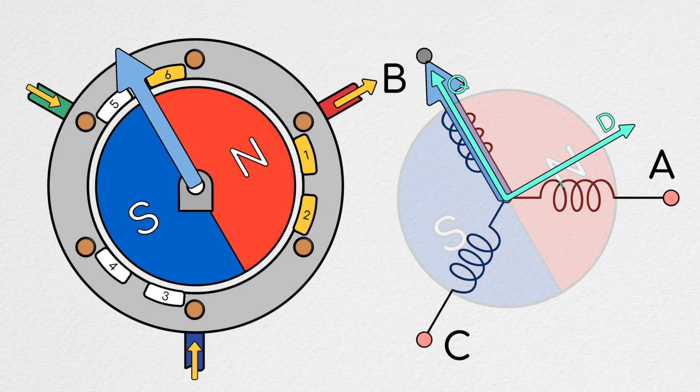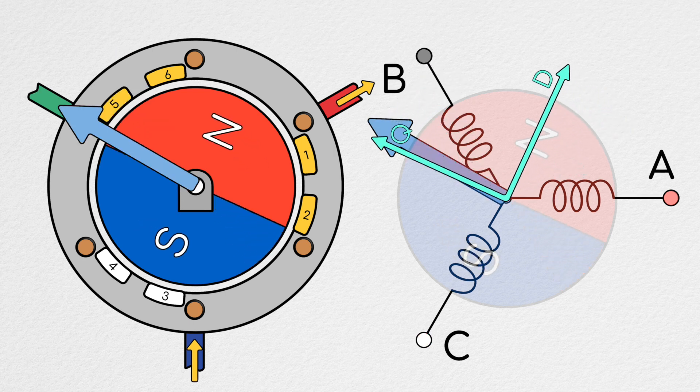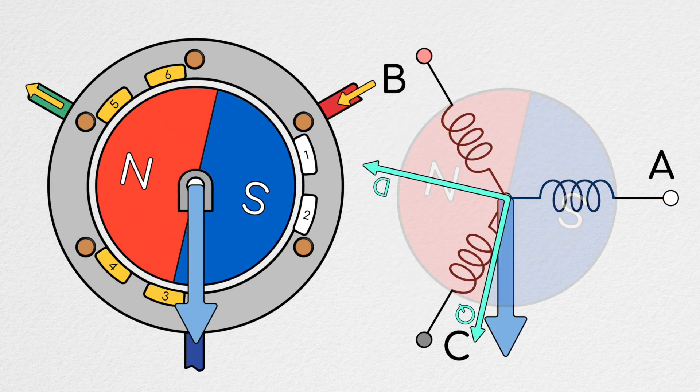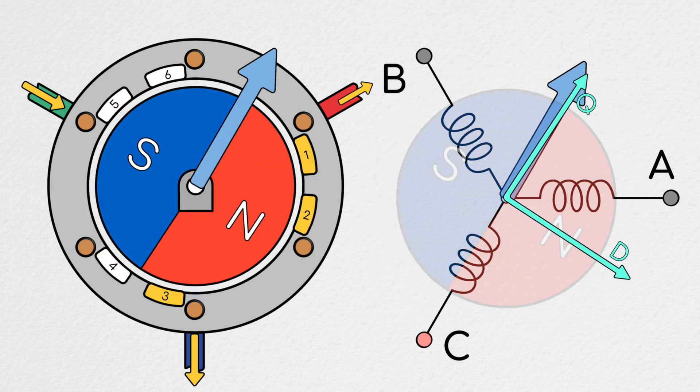For each of the six new hall sectors added by the new sensors, we can align our current with the Q axis by connecting either two phases to high and one to ground, or two phases to ground and one to high.